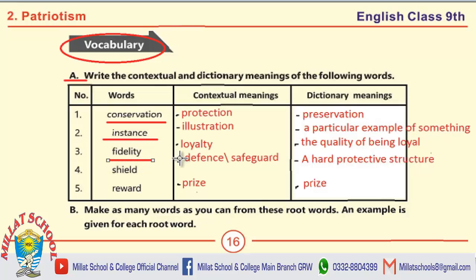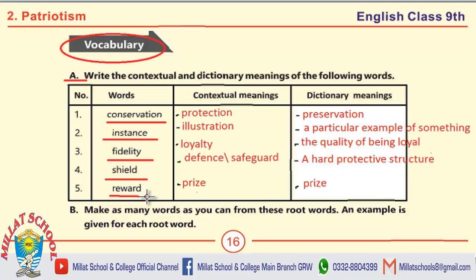The contextual meaning of fidelity is loyalty, and the dictionary meaning is the quality of being loyal. The meaning of shield is defense or safeguard, and the dictionary meaning is a hard protective structure. The contextual meaning of reward is prize, and the dictionary meaning is also prize.